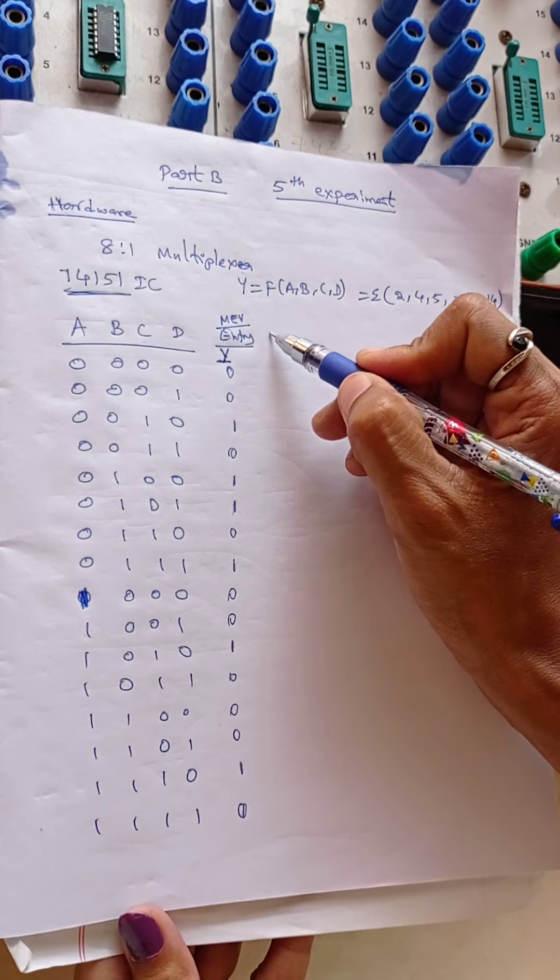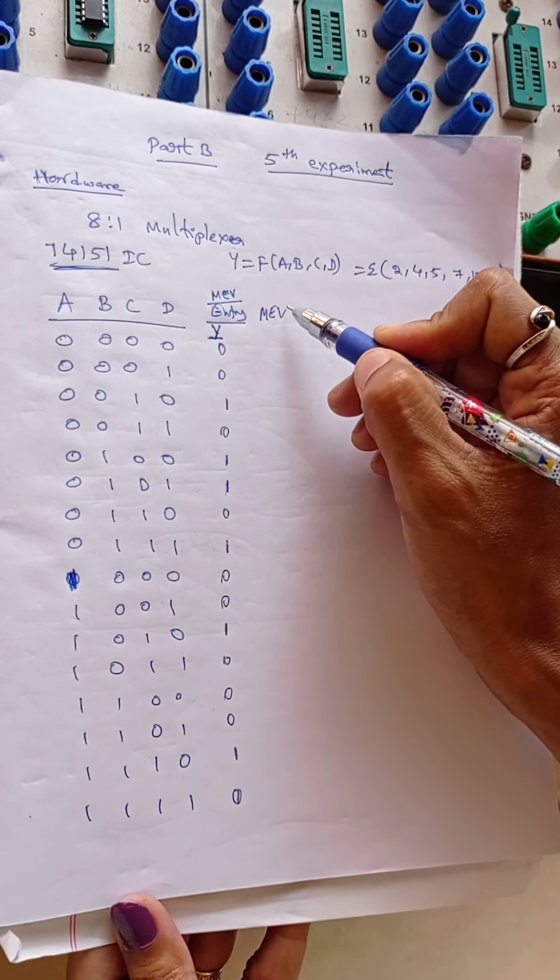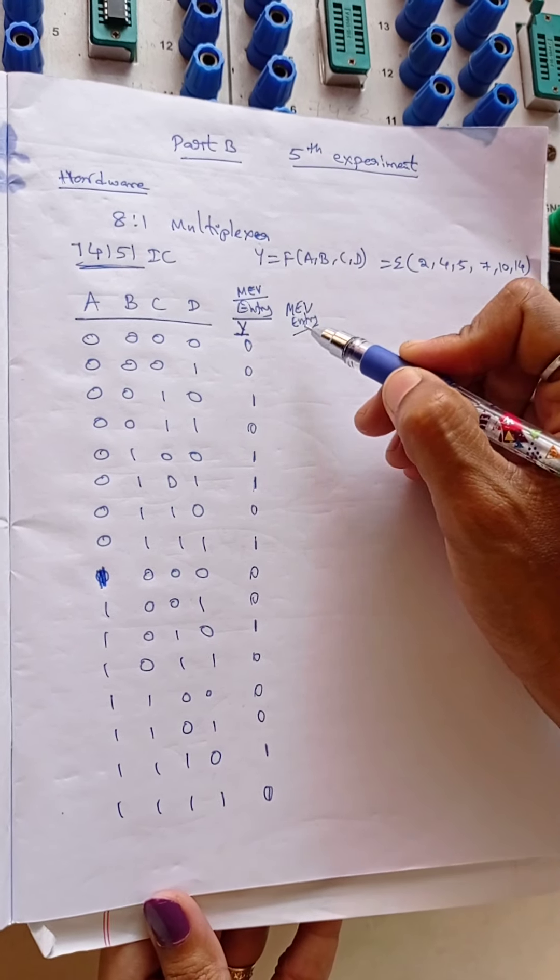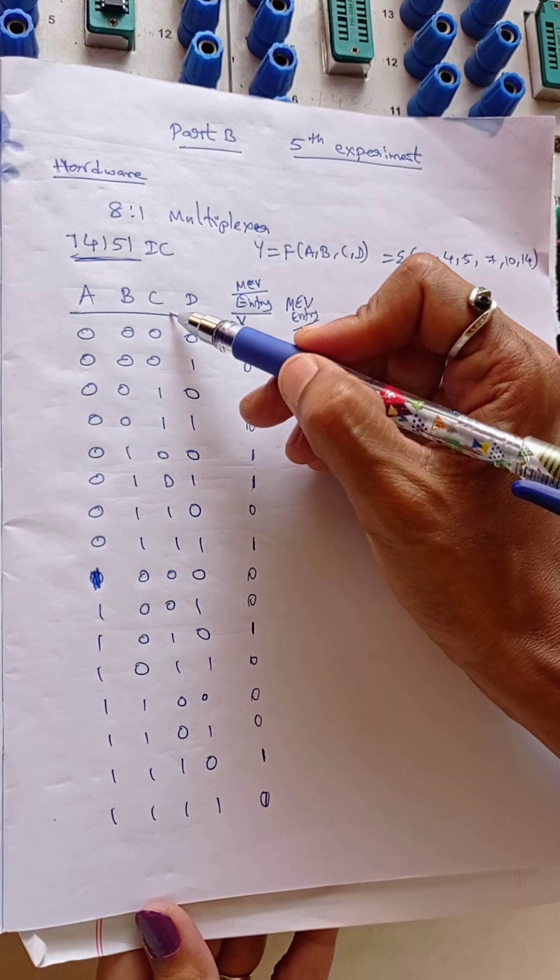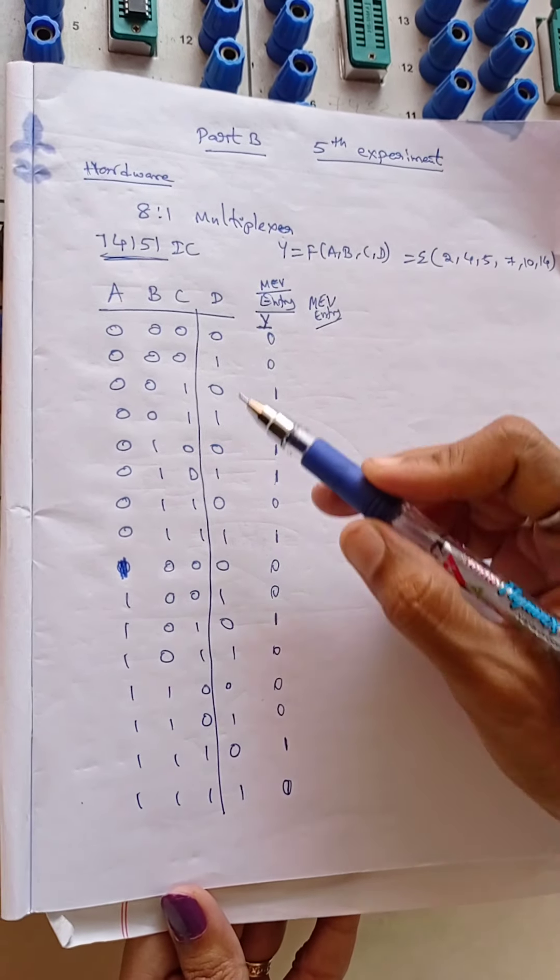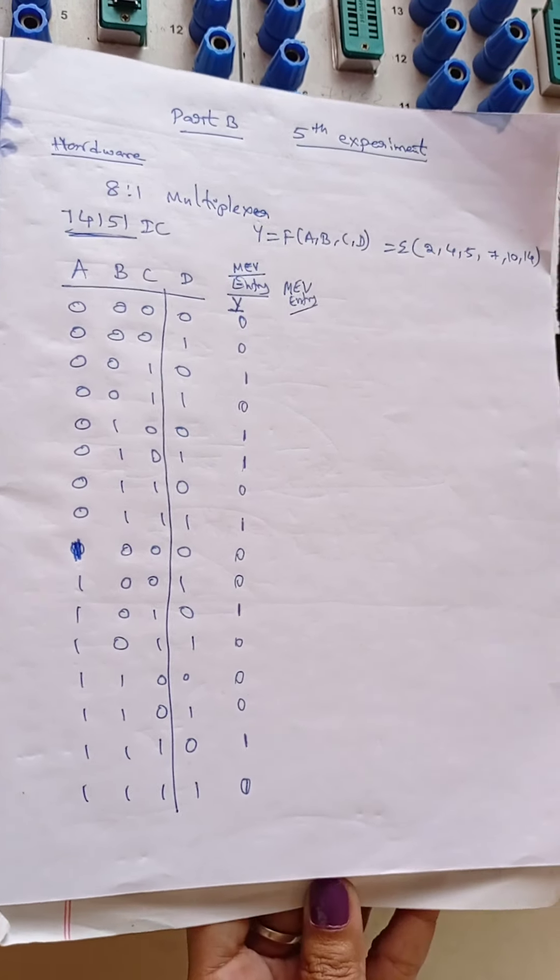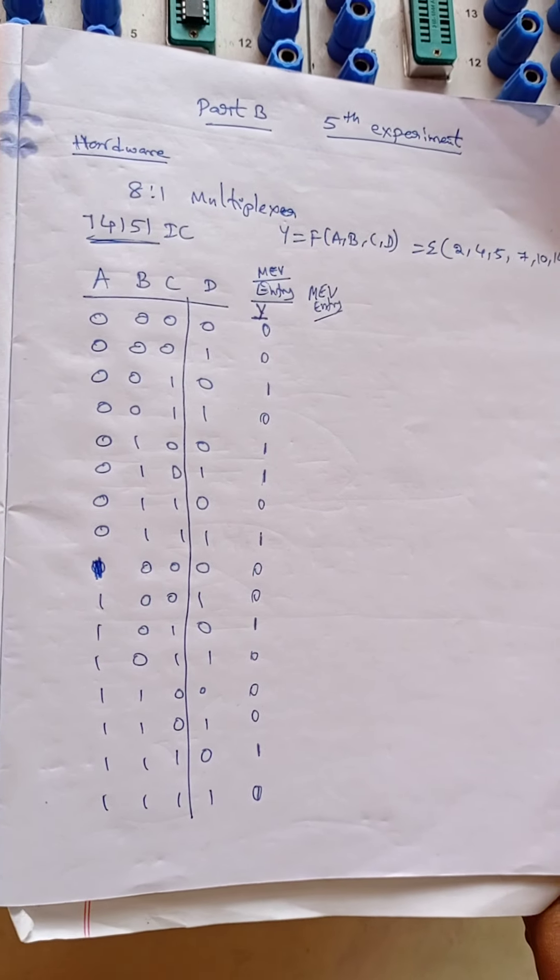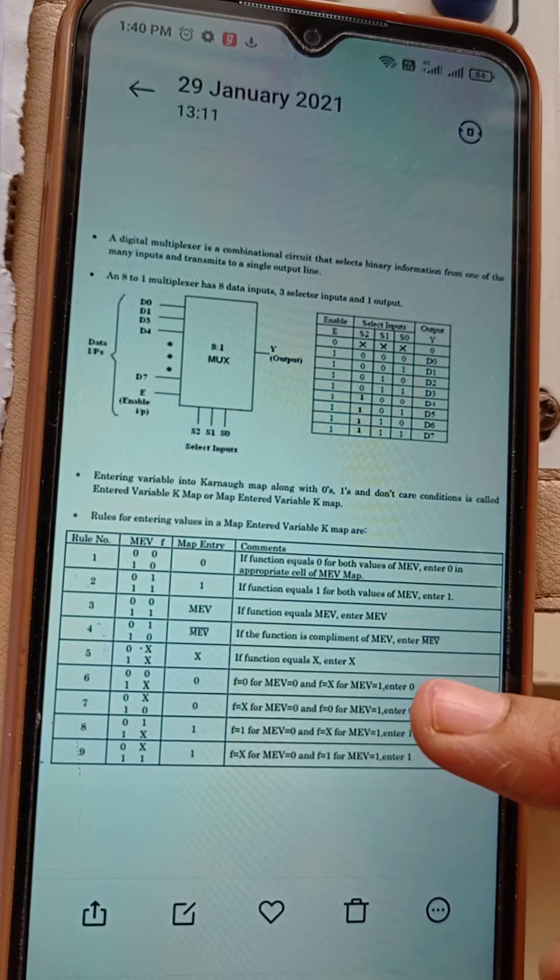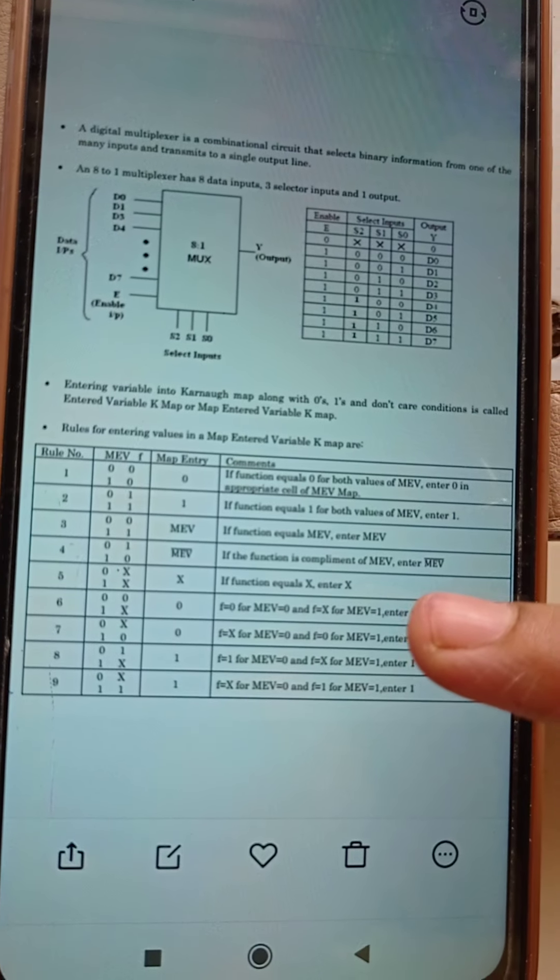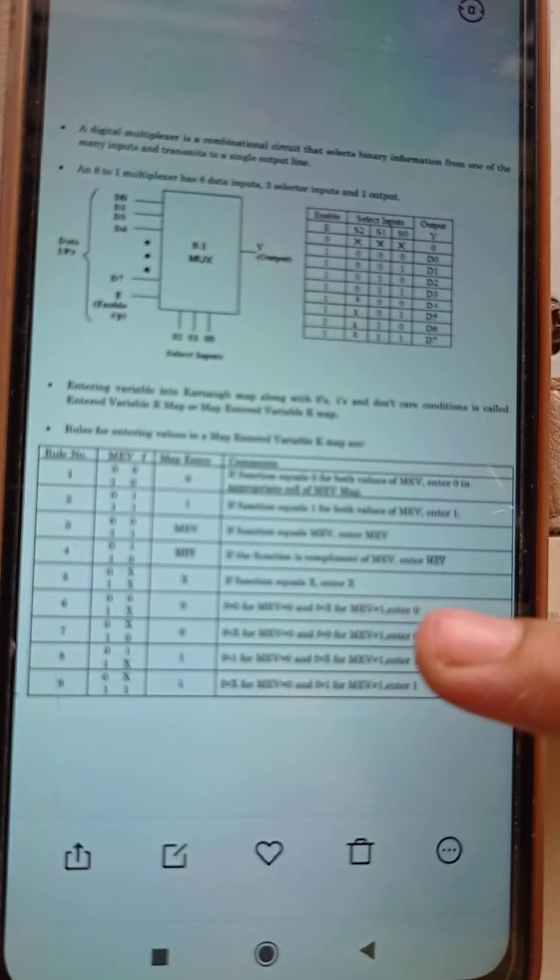Now we will enter MEV map, entered variable method. Using this method we are entering the values. For this we should take D as well as Y. This is the rules for entering K-map using MEV method.